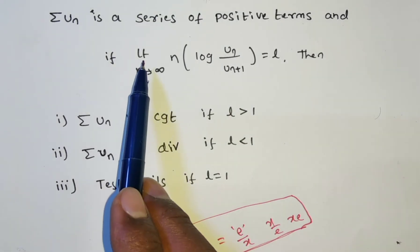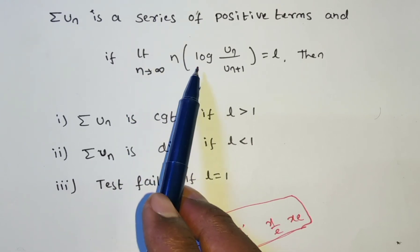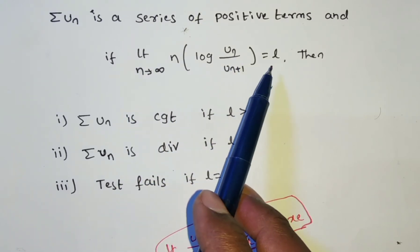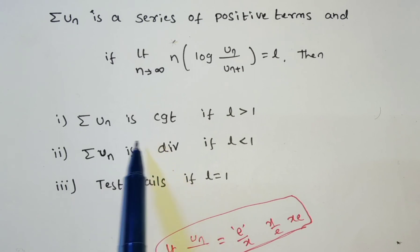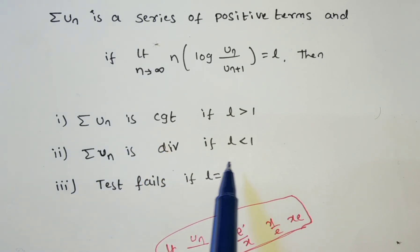In the logarithmic test, we need to find limit n tends to infinite, n into log of u_n by u_(n+1) is equal to l. If l greater than 1, series is convergent, l less than 1, series is divergent, l is equal to 1, test fails.